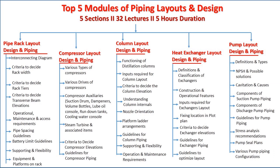Ladder and platforms associated with any column will also be covered — how to orient them and why there are so many configurations. Then guidelines for column piping, including thumb rules we must follow. Supporting and flexibility aspects will be covered so that all these aspects are addressed before going to the stress team. Operational and maintenance requirements and the criteria for finalizing the location of columns will also be discussed.